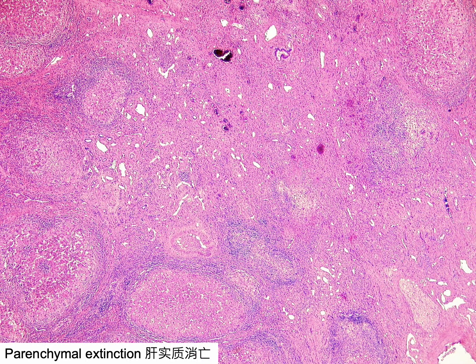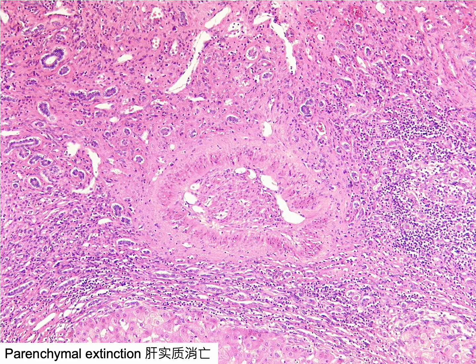Parenchymal extinction refers to the focal loss of contiguous hepatocytes due to localized ischemia caused by a vascular blockage in cirrhotic livers. This condition can affect a small portion of a liver unit, larger sections encompassing one or more adjacent units, or even an entire lobe, contingent upon the size of the obstructed vessels. It differs from panacinar necrosis by its cirrhotic background. Parenchymal extinction lesions typically arise from the blockage of veins larger than 100 microns and can persist after cirrhosis has manifested, potentially explaining the gradual decline in liver functional capacity even after the initial causative injury has ceased.